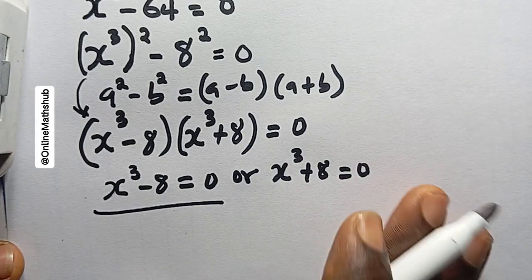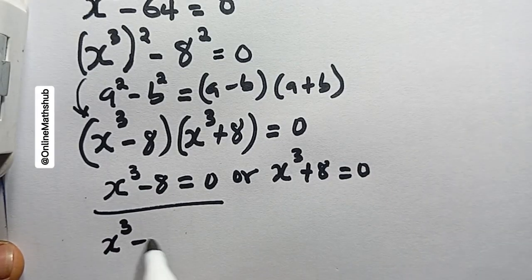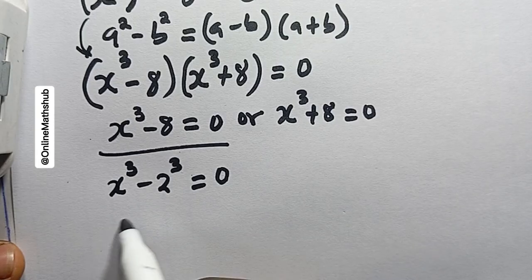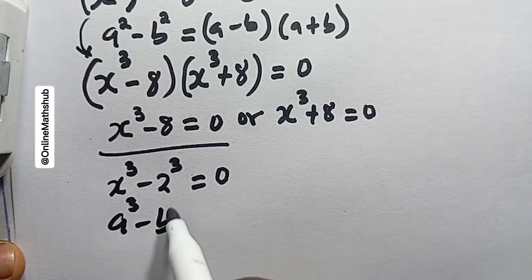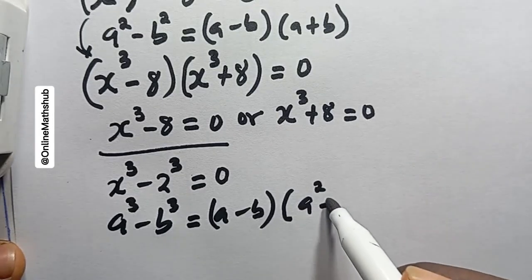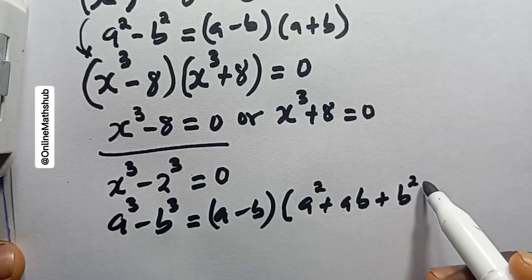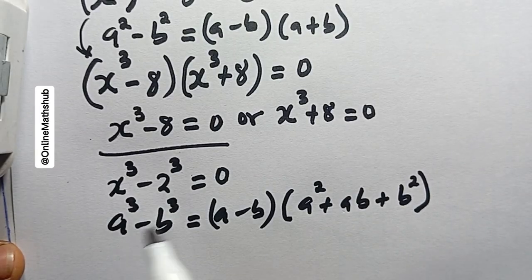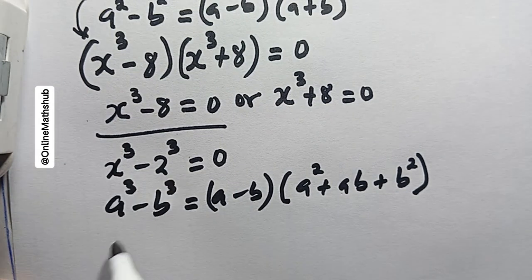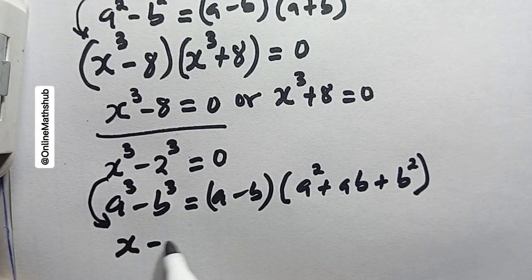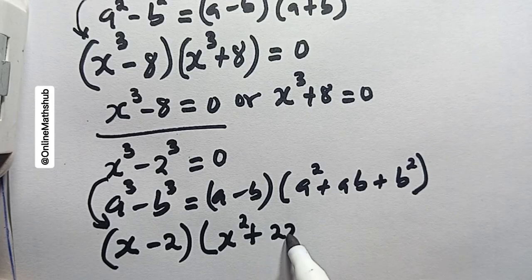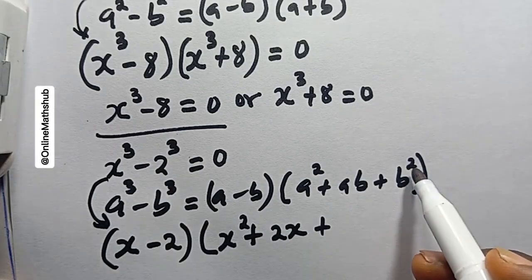For case one, x cubed minus 8 equals 0. I can write 8 as 2 to the power of 3, so this is the difference of two cubes. Remember: a cubed minus b cubed expands to a minus b, multiplied by a squared plus ab plus b squared. Applying that here, a is x and b is 2.